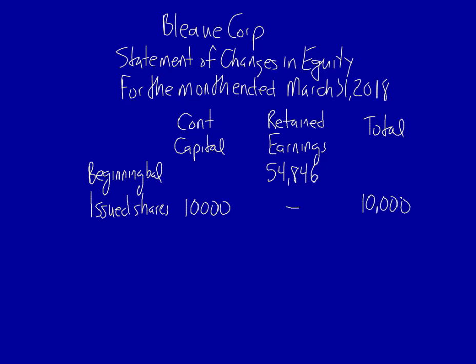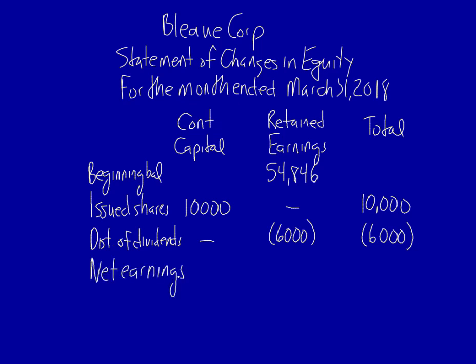Next, a distribution of dividends. The distribution of dividends, as you can note from the flow chart, only affects retained earnings — negative six thousand. Add them together: negative six thousand. Finally, net earnings. Net earnings never impacts contributed capital; instead it goes under retained earnings because it's one of the items used to calculate ending retained earnings — seventy-six thousand eight hundred and four. Add them together. No other changes, so we have the ending balance.